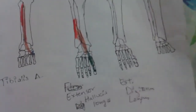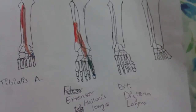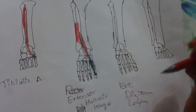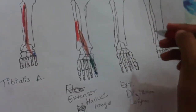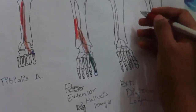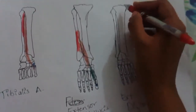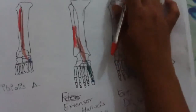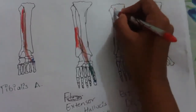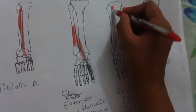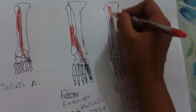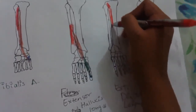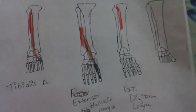The third muscle is extensor digitorum longus. Unlike extensor hallucis longus, which takes its origin from the fibula, extensor digitorum longus takes its origin from the tibia — specifically from the lateral condyle of tibia and the upper three-fourths of the medial surface of tibia.